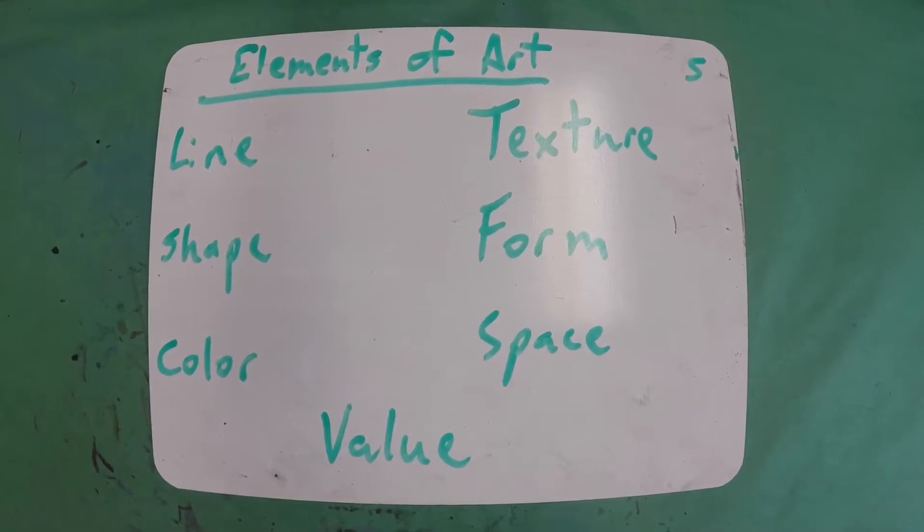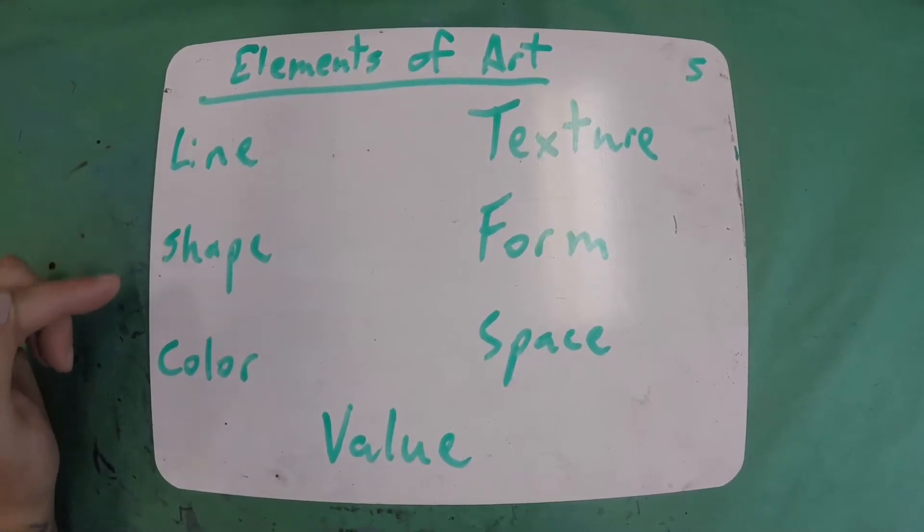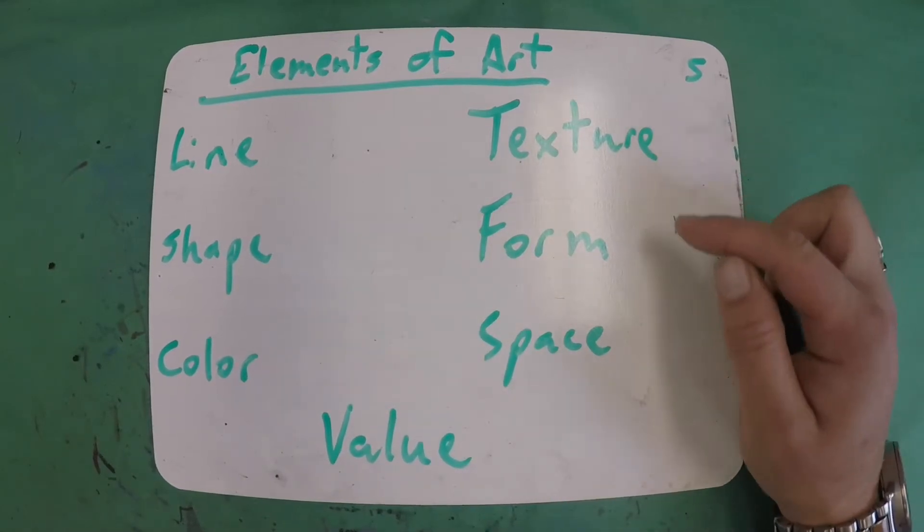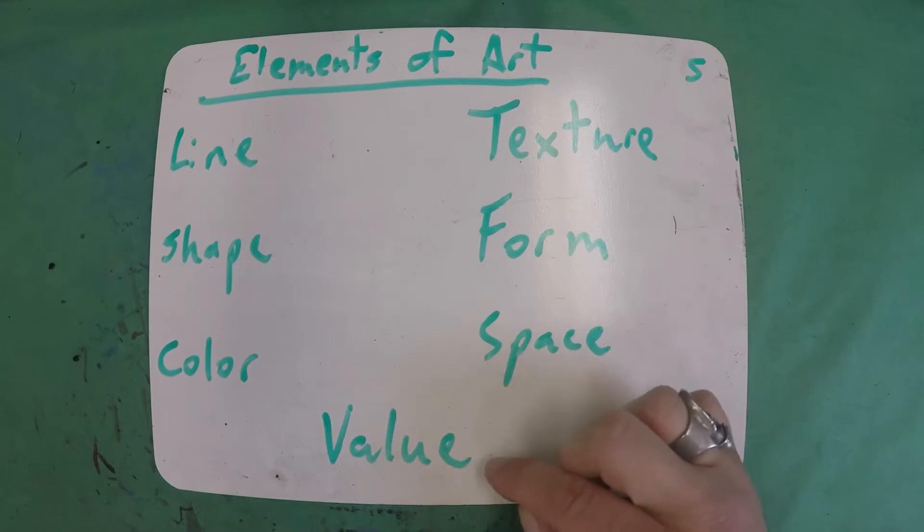So please repeat these seven words after me. Line. Shape. Color. Texture. Form. Space. Value.